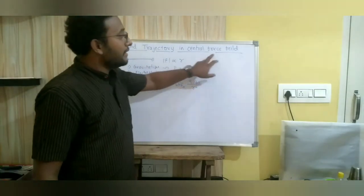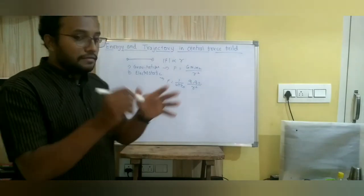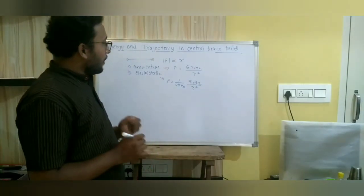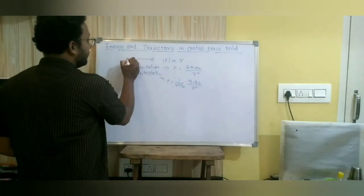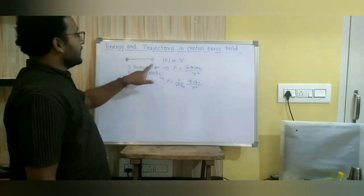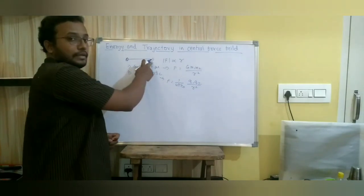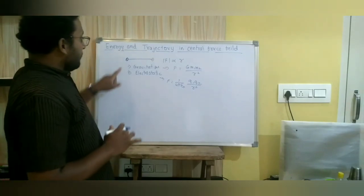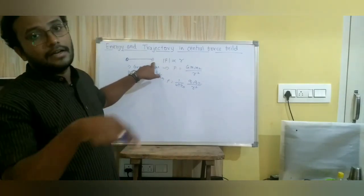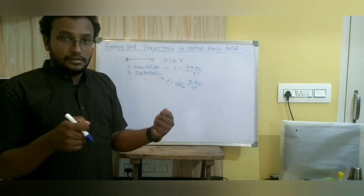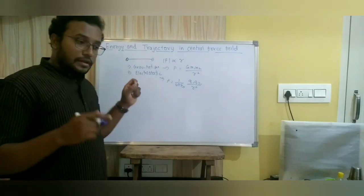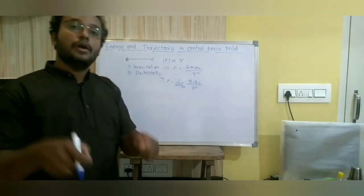A central force field is a region of space where there exists a central force. If a charged particle is exerting force on another charged particle and that second particle is in motion, the first is called the source of the central force field and the second is the test particle. Similarly, for two masses m1 and m2, if one is moving under the force of the other, that stationary one is the source and the moving one is the test object.